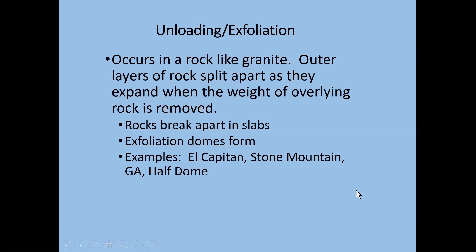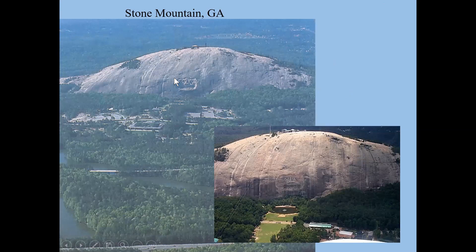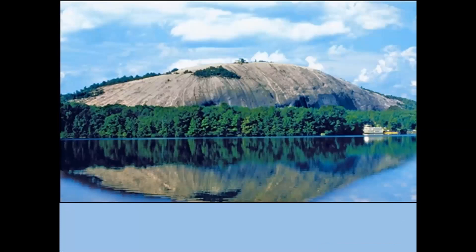We call these exfoliation domes. Examples include Stone Mountain in Georgia, Half Dome in Yosemite, and El Capitan in Yosemite. Stone Mountain was a granite pluton that is now poking up out of the piney woods near Atlanta. If you've flown into the Atlanta airport, you may have seen it. Its nice rounded shape is the result of exfoliation.